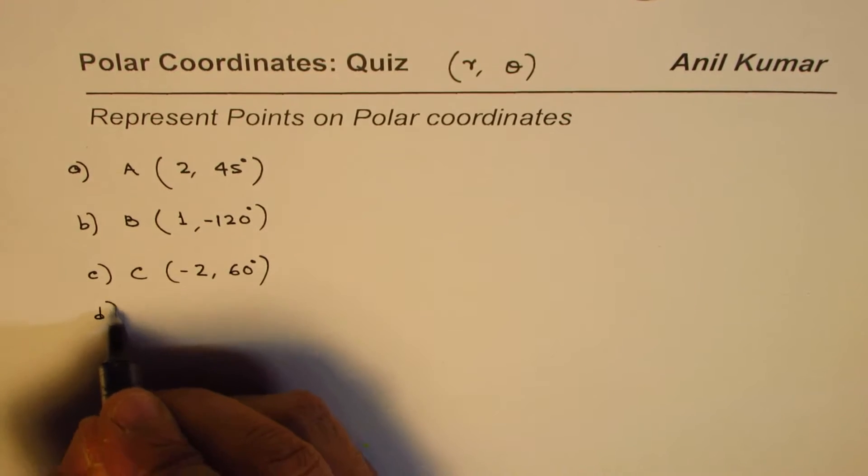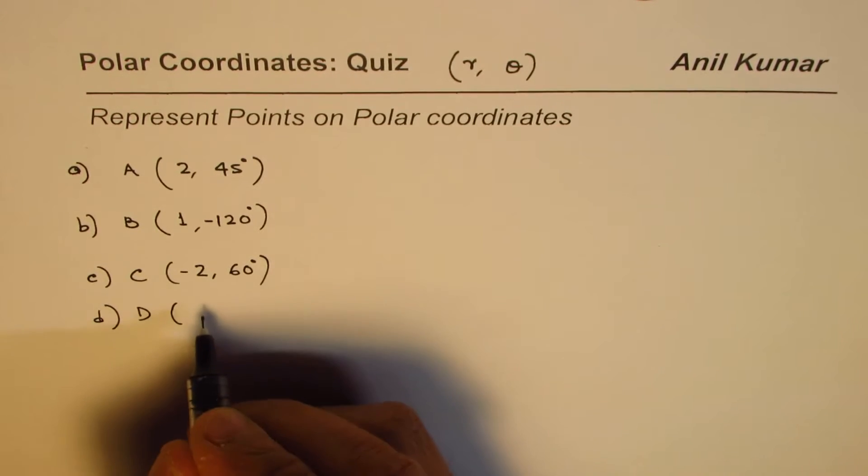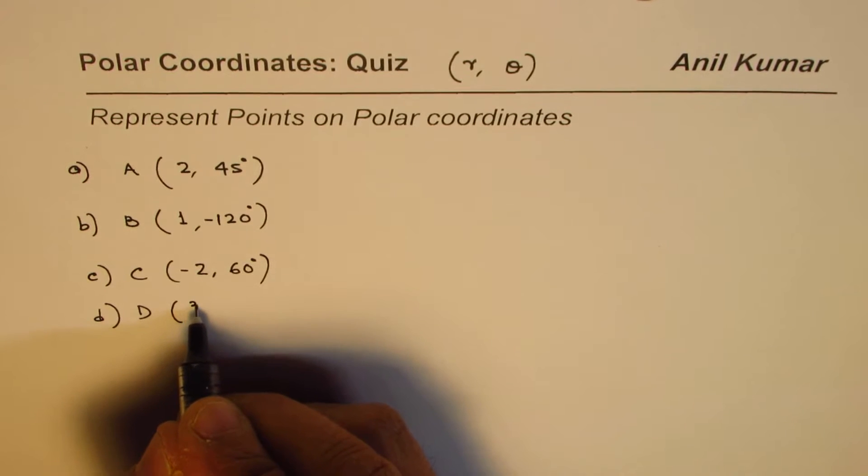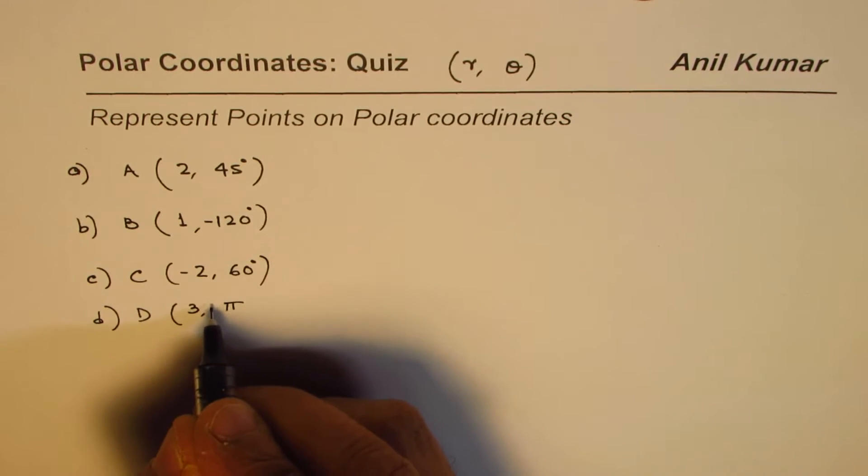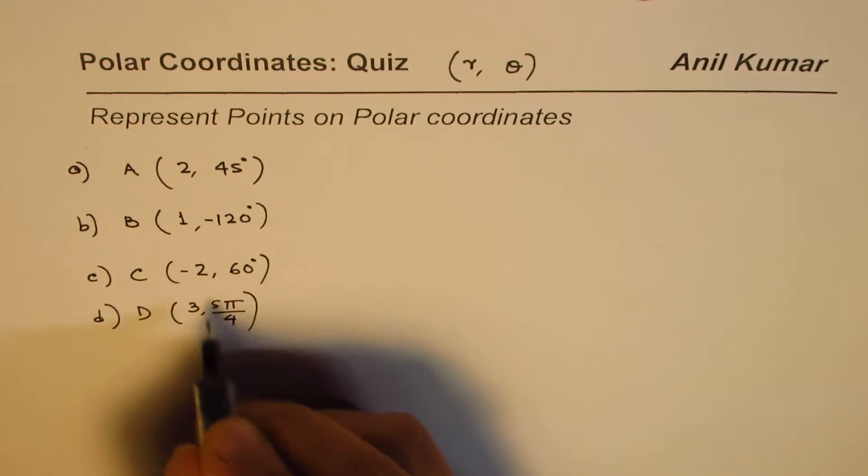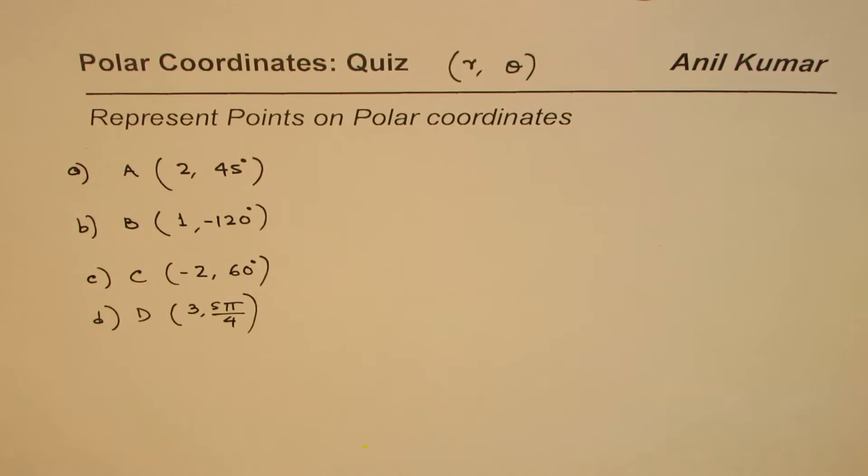Let me take a few in radians. So let's say point D is magnitude 3 and the angle is, let us say, 5π/4. So these are few points which you can practice and then we'll move forward.